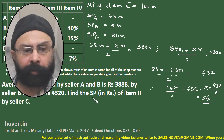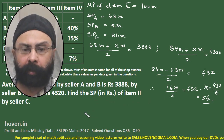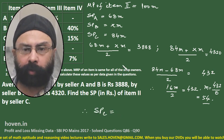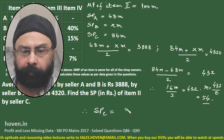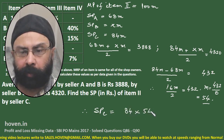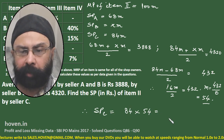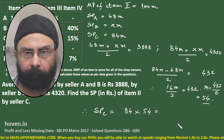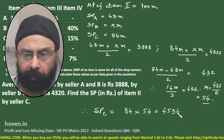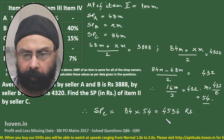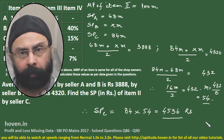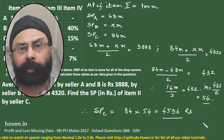Therefore, sale price of item 2 by seller C equals 84 multiplied by m, which is 84 into 54, giving 4536 rupees as the required answer. Let us move to the next question now.